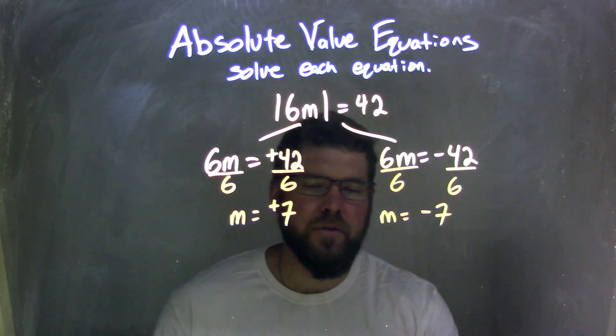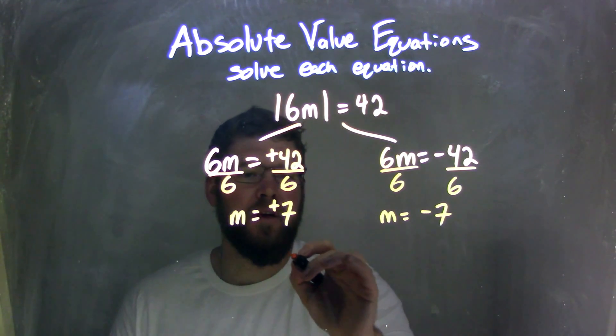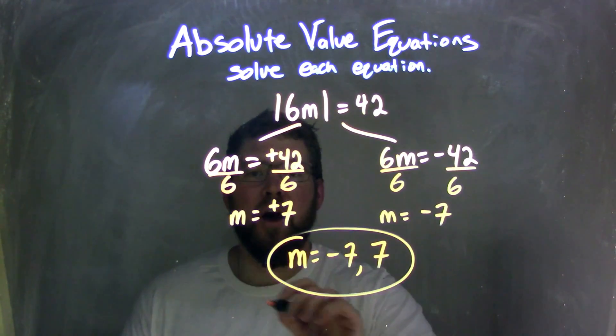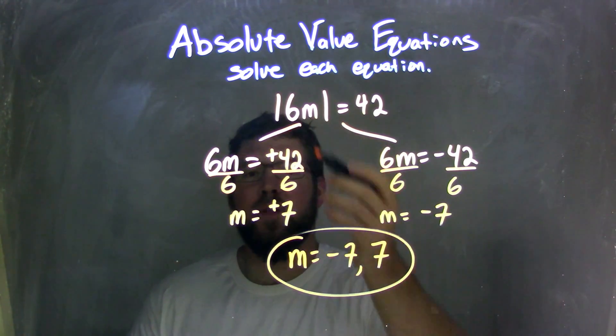Okay, and so my answers here, I have two answers, is m equals a negative 7 and a positive 7. And there we go. We have two solutions that work for this equation.